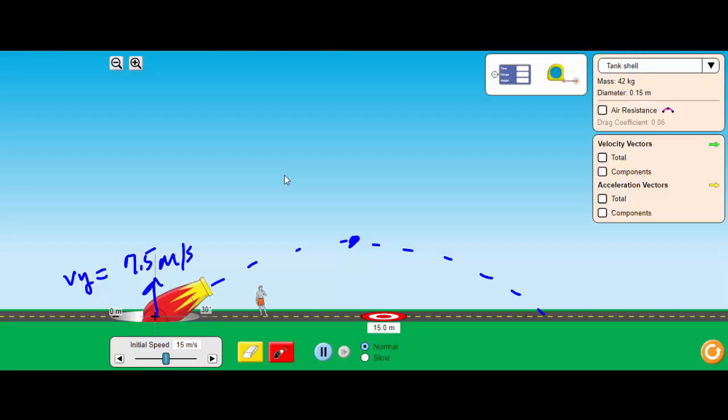How long does it take for the projectile to get to the top? I'm going to use my V is equal to GT. So my velocity is 7.5 and that is equal to 9.8 times time, so my time is equal to 7.5 divided by 9.8, which gives me 0.77 seconds.